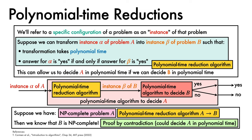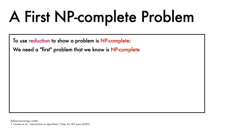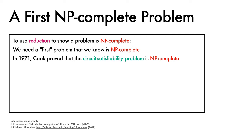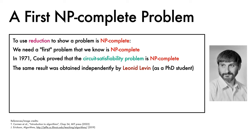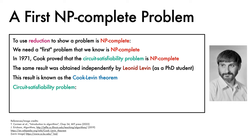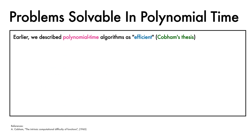This construction is tremendously useful for NP-completeness. Suppose problem A is known to be NP-complete, and we find a polynomial time reduction from instances of A to instances of B. Then we have shown B is NP-complete — by a simple proof by contradiction: if B were not NP-complete, we could decide A in polynomial time. We now come to the third part of our strategy: in order to use reduction to show a problem is NP-complete, we need a first NP-complete problem. In his 1971 work, Stephen Cook proved that the circuit satisfiability problem is NP-complete. The same result was independently obtained by Leonid Levin, then a PhD student in Moscow, and is known as the Cook-Levin theorem. The circuit satisfiability problem takes as input a boolean circuit of AND, OR, and NOT gates, and asks: does there exist a set of boolean inputs that causes the output of the circuit to be 1?